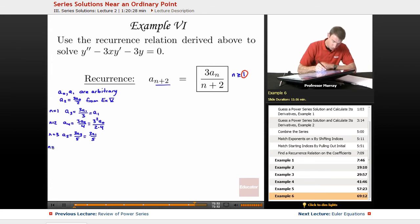N equals 4 is going to give me A6 is 3A4 over 6, which is 3 cubed A0 over 2 times 4 times 6. N equals 5 is going to give me A7 is 3A5 over 7, which is, in terms of A1, is 3 squared times A1 over 3 times 5.